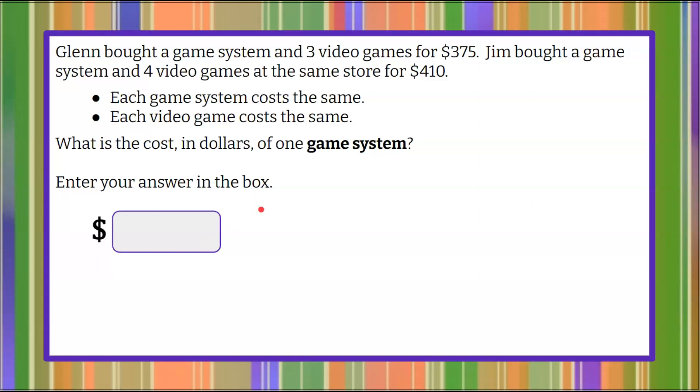Welcome back. Again, we're going to find the cost in dollars of one game system. To do this, we're going to write an equation for Glenn, and then we'll write an equation for Jim. So we're going to start with Glenn, and what did Glenn do? He bought a game system, one game system and three video games, for a total amount of $375.